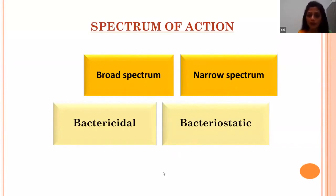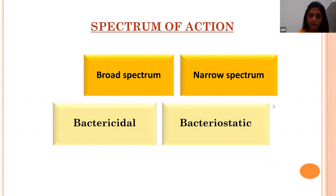Based on antimicrobial activity, we classify antibiotics as broad spectrum or narrow spectrum. Broad spectrum antimicrobials act on both gram-positive and gram-negative organisms — examples include penicillins, cephalosporins, and fluoroquinolones. Narrow spectrum antibiotics act on either gram-positive or gram-negative organisms but not both — examples are macrolides and aminoglycosides. There is also an extended spectrum category, active against gram-positive or gram-negative organisms plus some additional organisms.